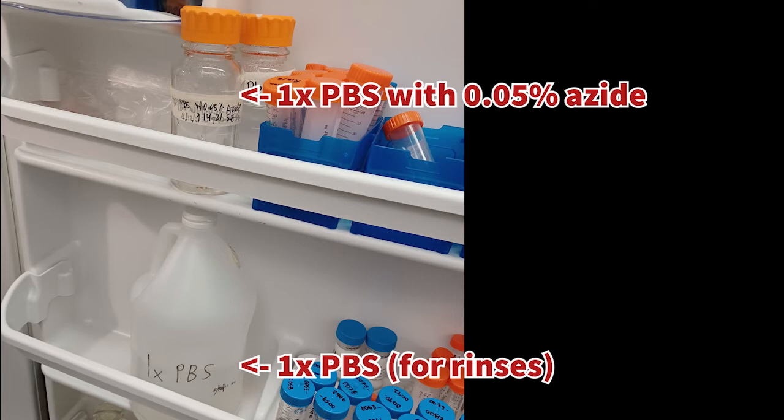In order to do rinses and prep for storage, you will need to grab the containers for 1xPBS and another container for 1xPBS with azide from the fridge door, pictured here.